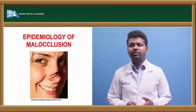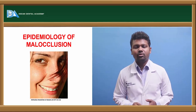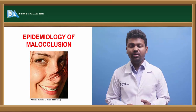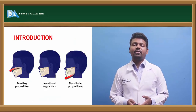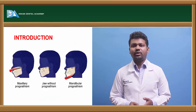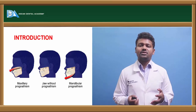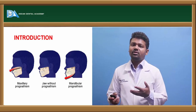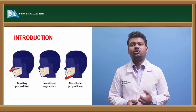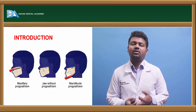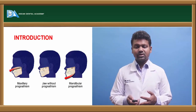Good morning everyone. Today we will be discussing the epidemiology of malocclusion. It will be coming as your short note. The term orthodontics is coined by Frenchman Le Philon in the year 1839, which is a Greek word where ortho means correct, odontos means tooth, and ICS means science.